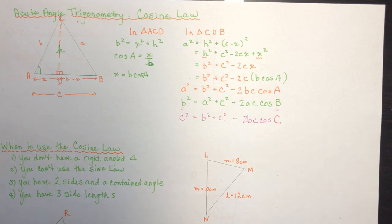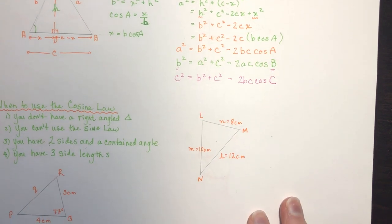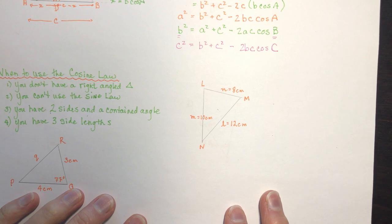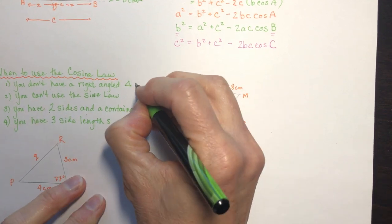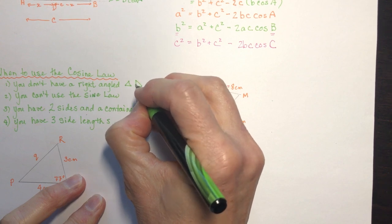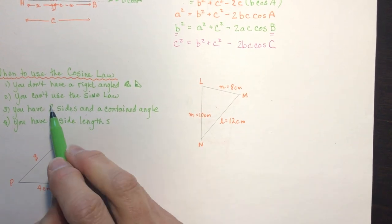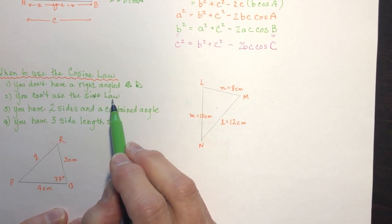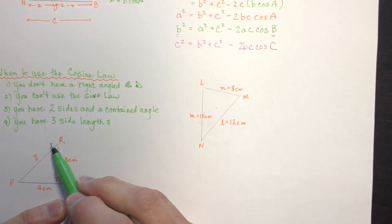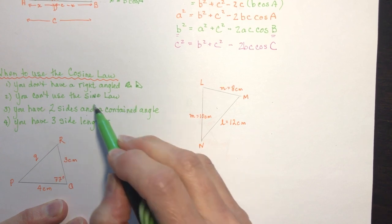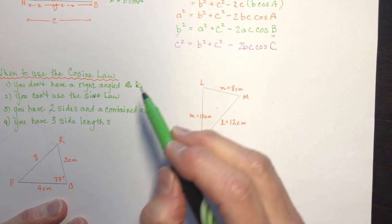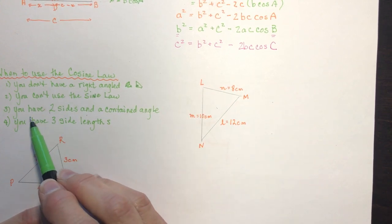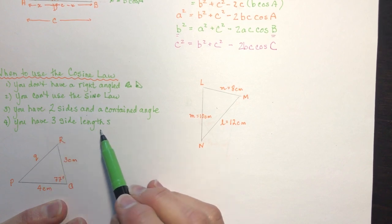So when do you use the cosine law? You use it when you don't have a right-angled triangle and you can't use the sine law — meaning you can't make that double-cross pattern. Specifically, you use it when you have two sides and a contained angle, or when you have all three side lengths.